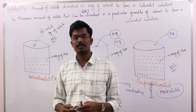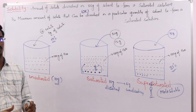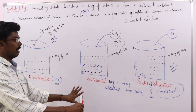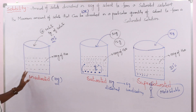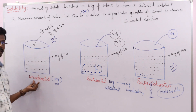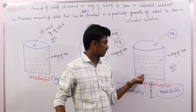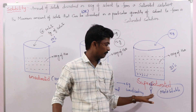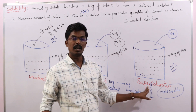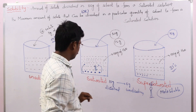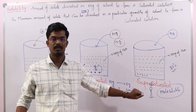So you can simply understand the terms: the maximum amount that can be accommodated is called saturated; the lesser amount compared to the maximum is called unsaturated; and when you increase the temperature so it becomes soluble, but on removing the temperature it again appears as undissolved — that is called supersaturated solution. So unsaturated, saturated, and supersaturated solutions.